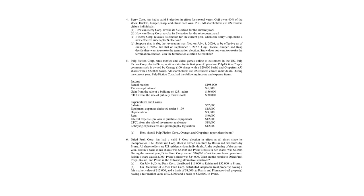Problem four: Barrie Corp has a valid S-election in effect for several years. Goji owns 40%, and Huckle, Juniper, Rasp, and Straw each own 15%. All shareholders are U.S. resident citizen individuals. How can Barrie Corp revoke its S-election for the current year? Assuming a calendar year starting January 1st, Barrie Corp must make the revocation election by March 15th of the current year due to the 2.5-month rule. More than 50% of the owners must agree, and you file a statement with the Form 1120S.